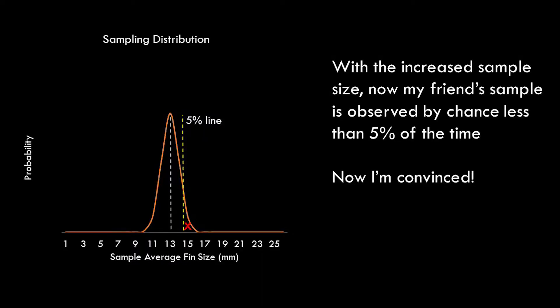Now let's compare her sample mean to the sampling distribution. We have enough data to be convinced that her tails are in fact longer, and it probably isn't due to chance — even though her tail length didn't change. We reduced the error, we reduced the noise, and now we have enough evidence to say that her tail sizes are larger than the average. And that's the sampling distribution!